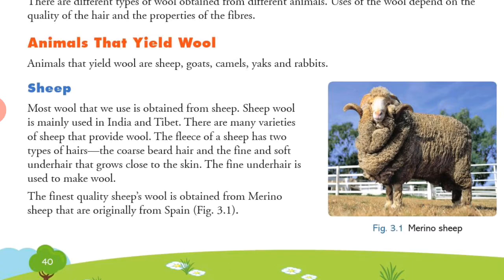Most wool that we use is obtained from the sheep. Sheep wool is mainly used in India and Tibet. There are many varieties of sheep that provide wool. The fleece or the hair of a sheep has two types of hairs: coarse beard hairs and fine, soft under-hair that grows close to the skin. The fine under-hair is used to make wool. The finest quality sheep wool is obtained from the merino sheep, originally from Spain.